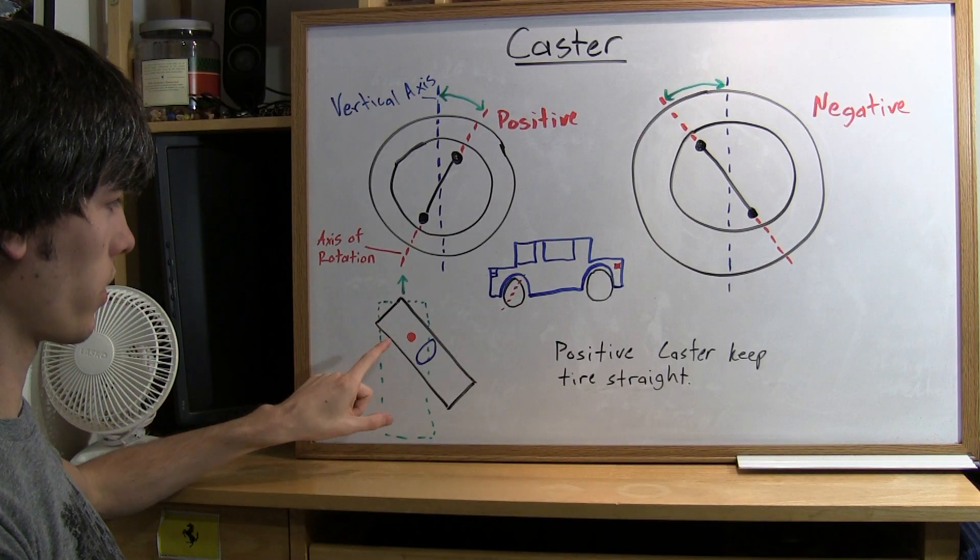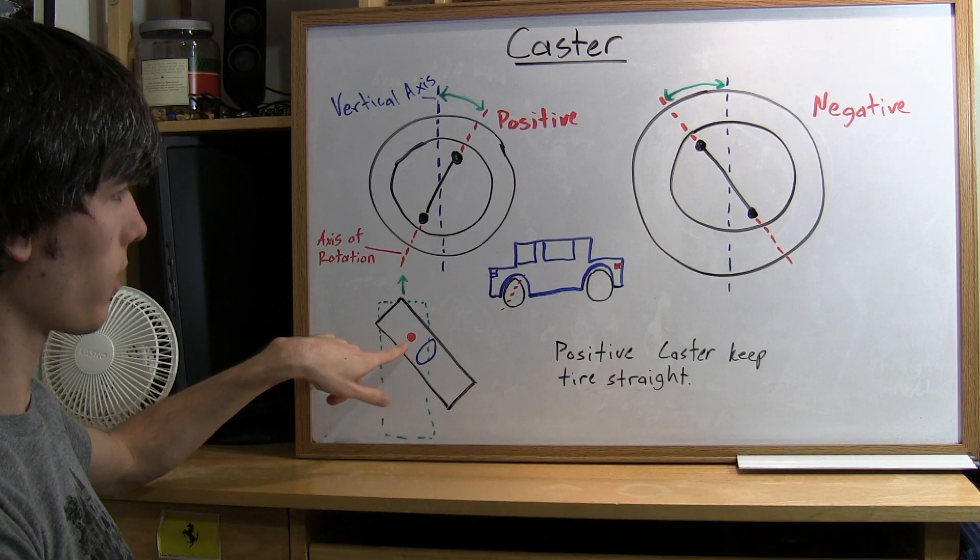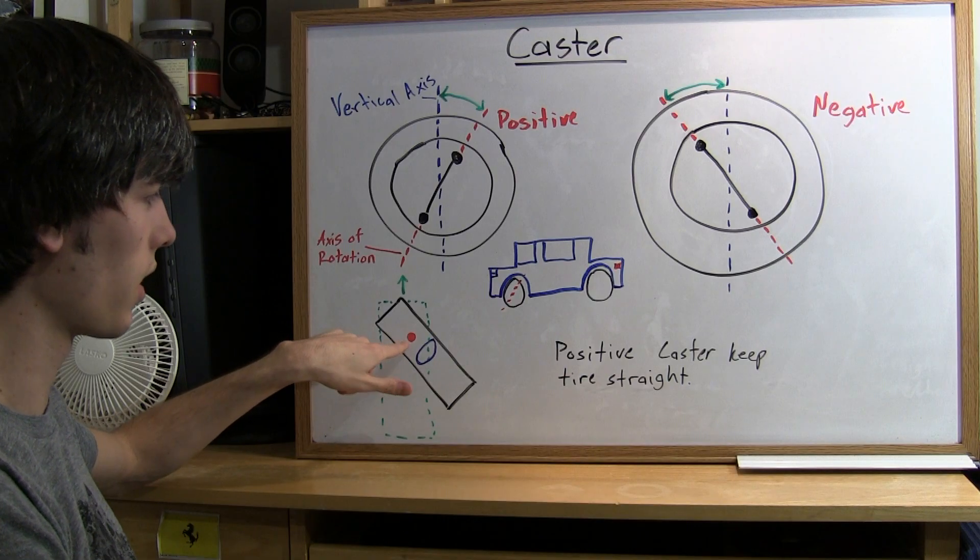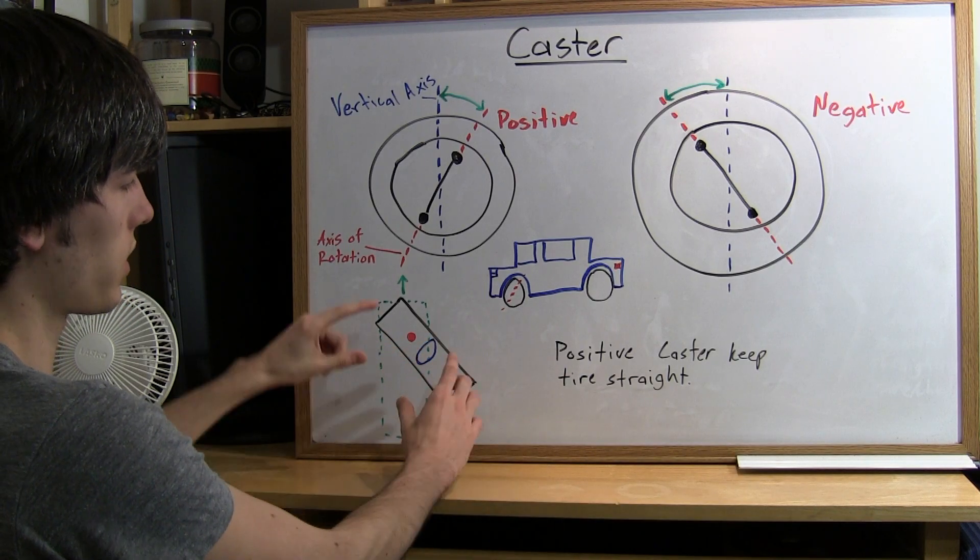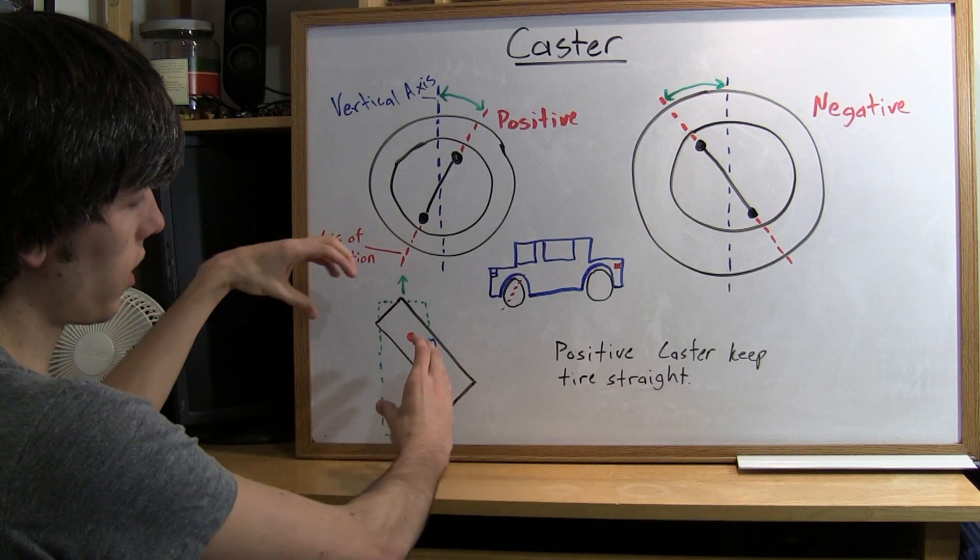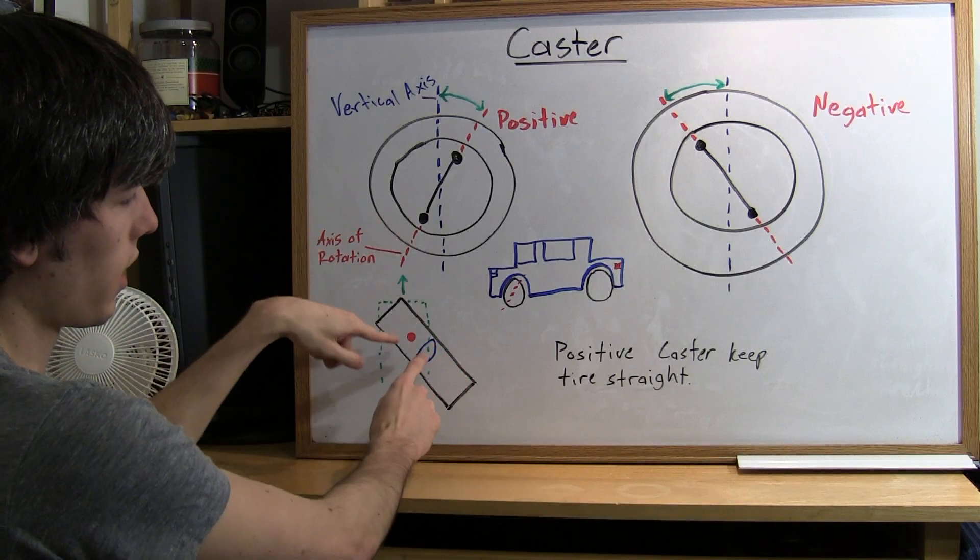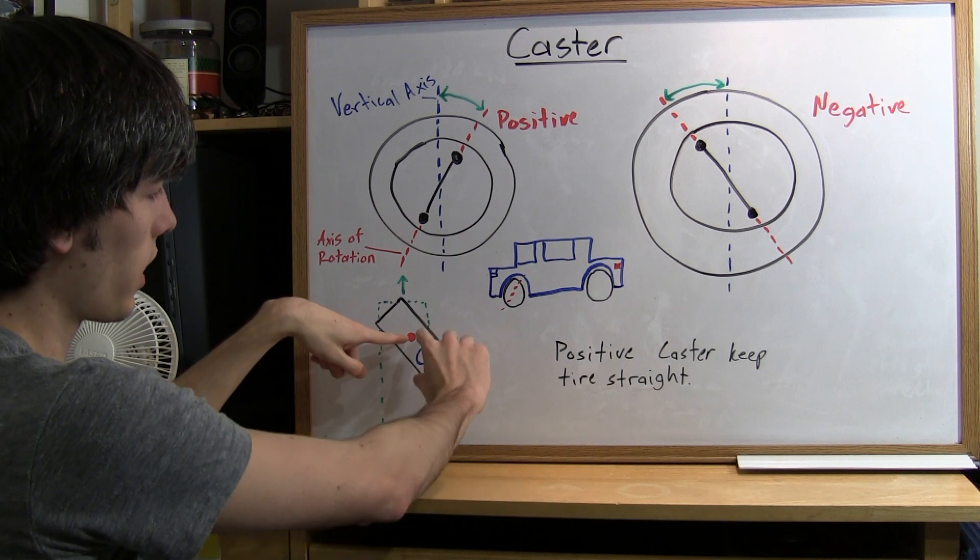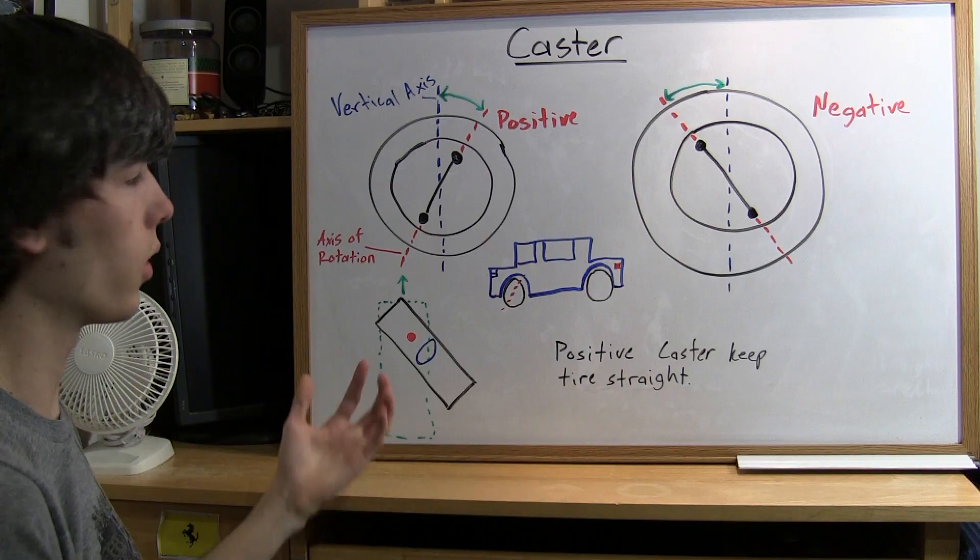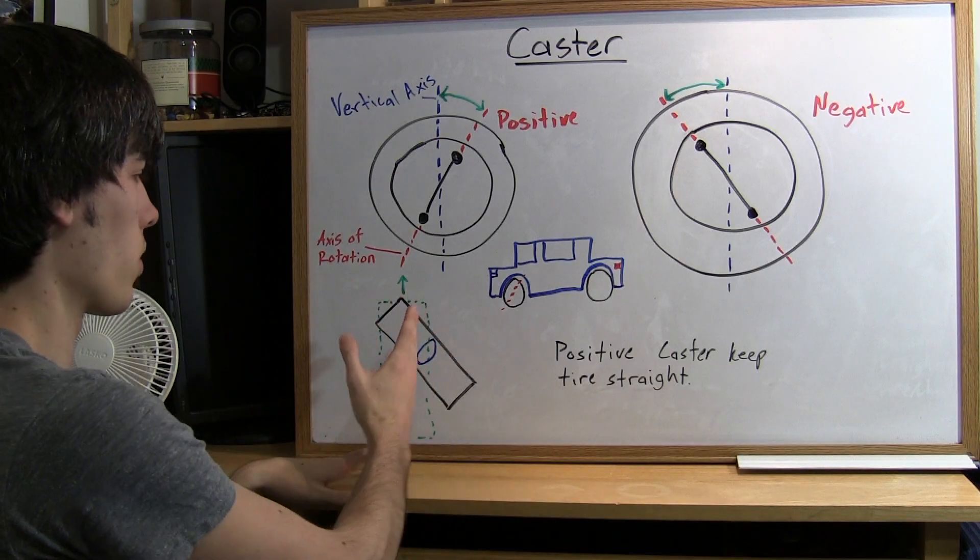Here I've got a little picture that shows that. This red dot right here is the axis of rotation, and this blue area is the contact patch of the tire. As you turn the tire from straight you can see this contact patch is behind this axis of rotation, so it's going to pull the tire straight once you let go of the wheel because of the torque.